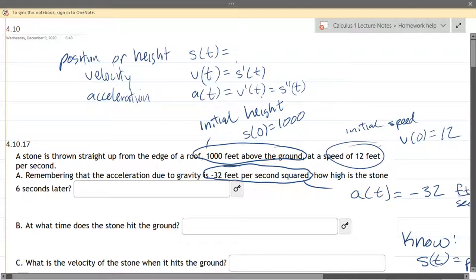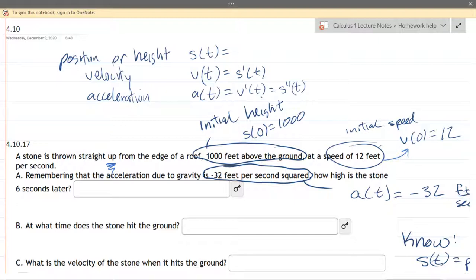Okay so moving on we have a speed of twelve feet per second. Now remember speed is absolute value so is this thrown up or down. The stone is thrown up from the edge of the roof not down towards the ground so that's why we're using positive twelve right over here. So that's the initial velocity, v of zero equals positive twelve because it's being thrown upwards.